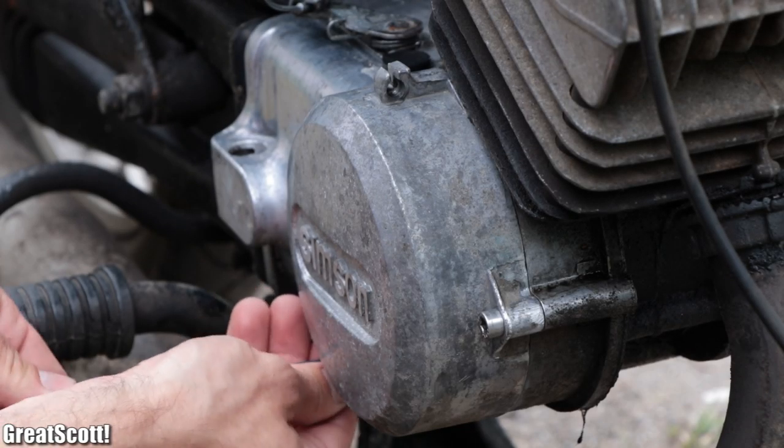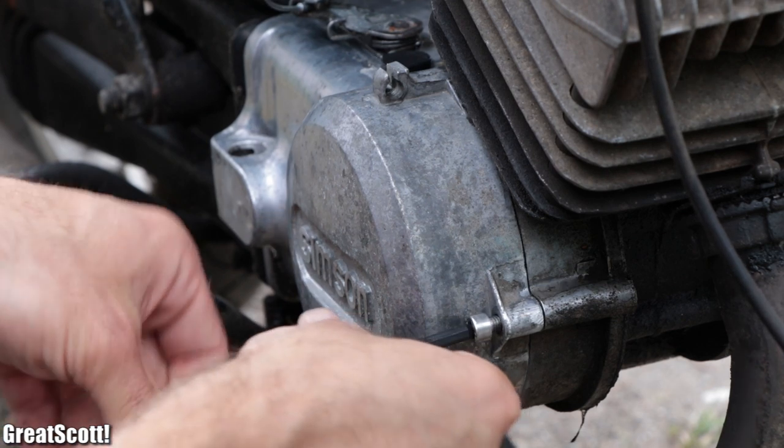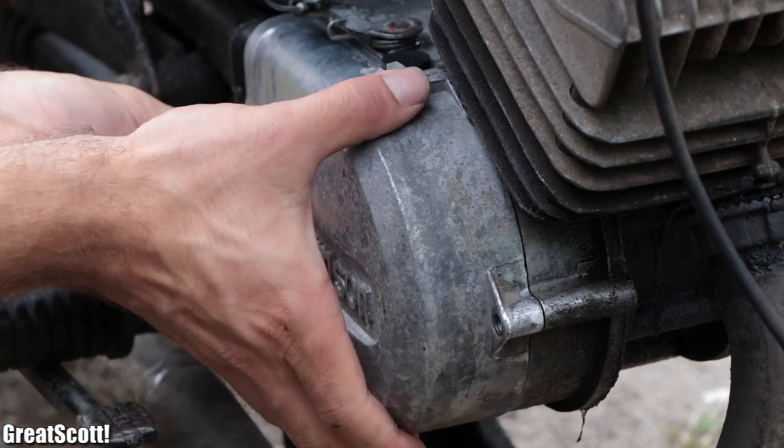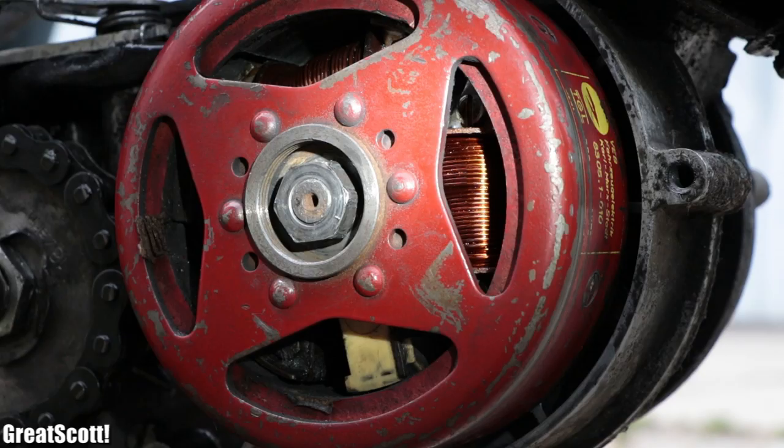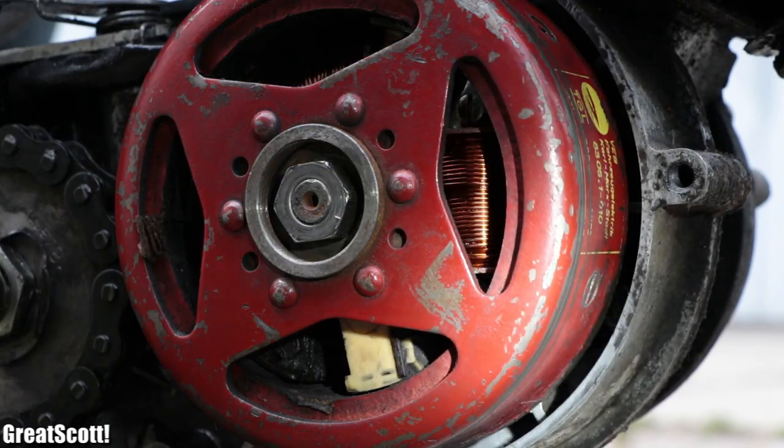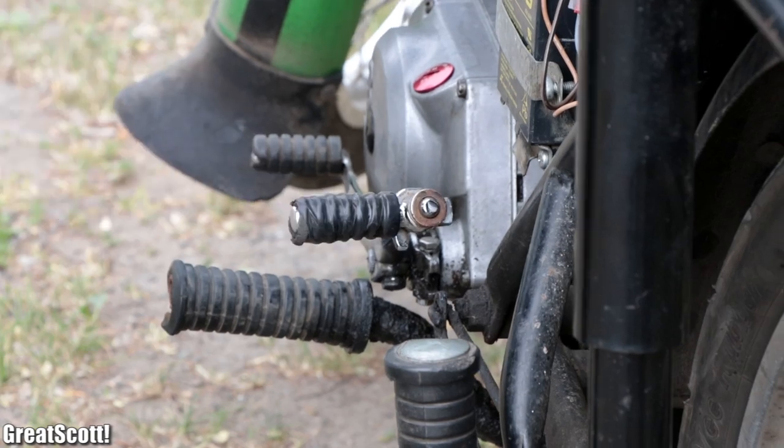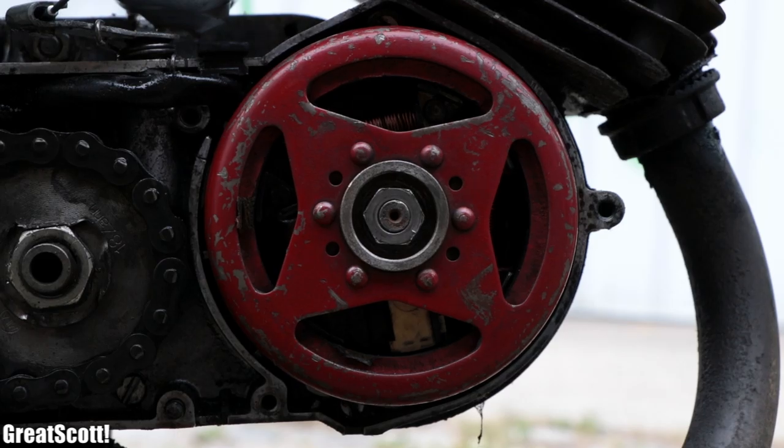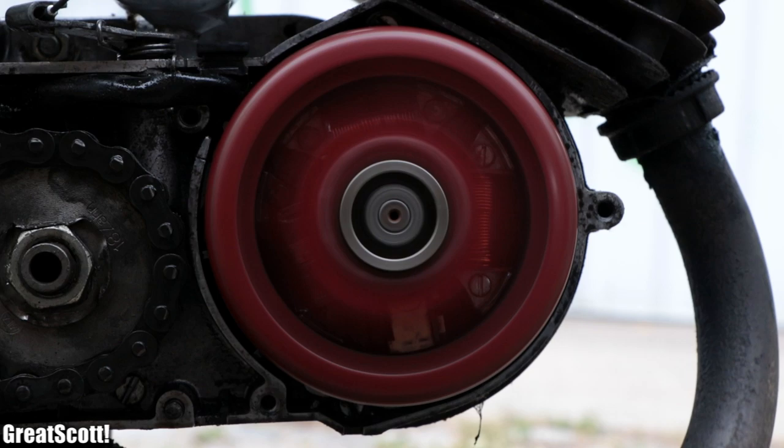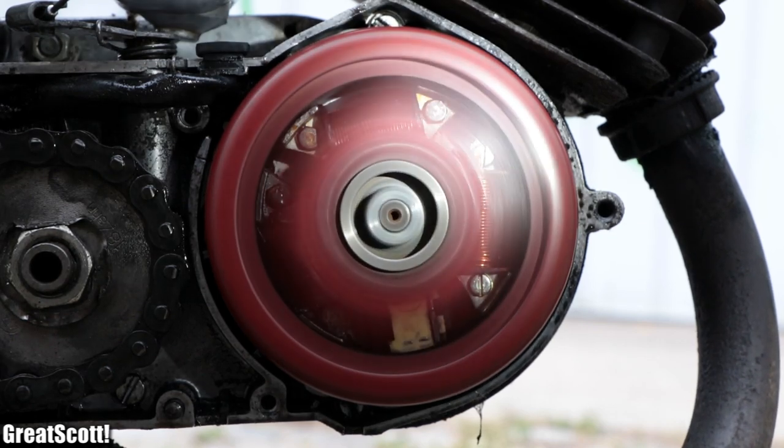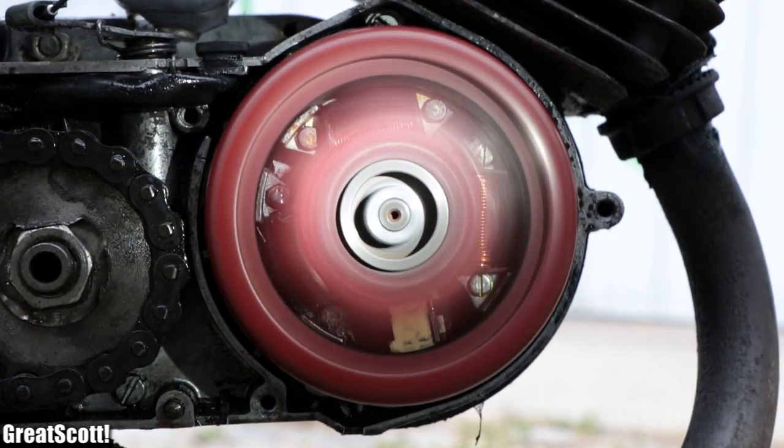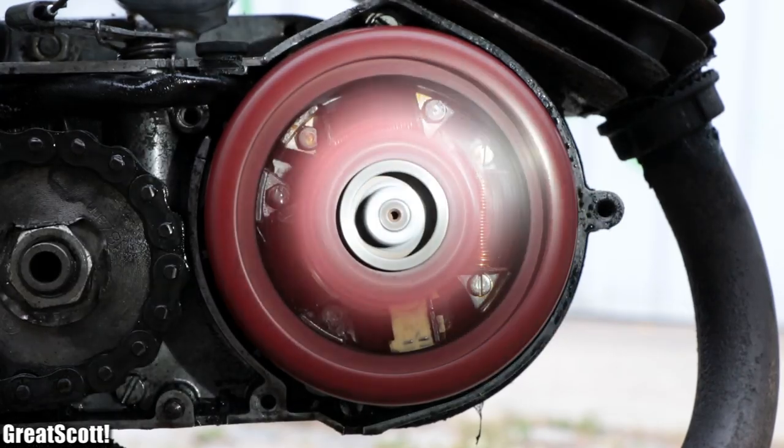To start off, we removed the mounting screws on the right side of the engine block in order to pull the lid off and thus reveal the electric generator of the moped. Now by turning on the motor and accelerating with the throttle lever, we can see how the red part of the generator starts spinning while the insides which apparently consist of three coils stay in place.